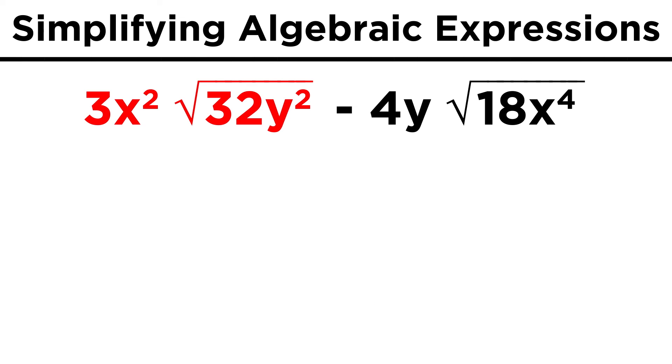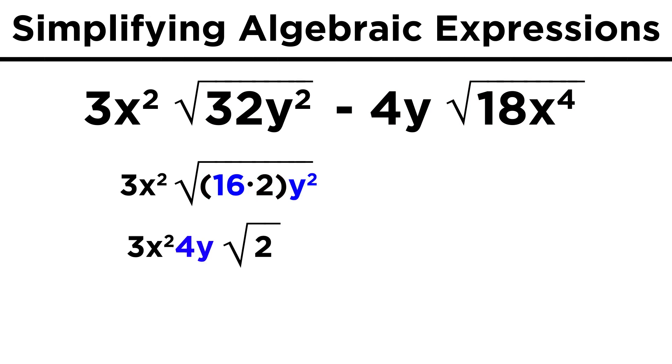How about this one, three x squared root thirty-two y squared minus four y root eighteen x to the fourth. First with the roots, we can't take out thirty-two, but if we make it sixteen times two, we can take out a four and a y. We can combine like terms to get twelve x squared y root two.